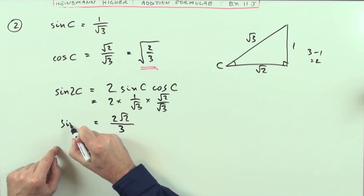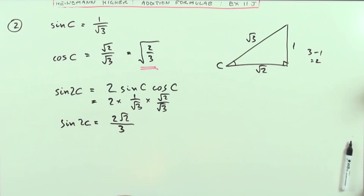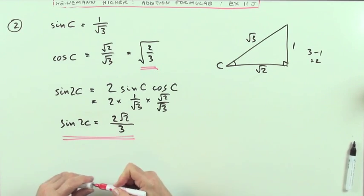So it is. The sine of 2C is 2 root 2 upon 3. There.